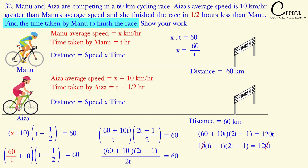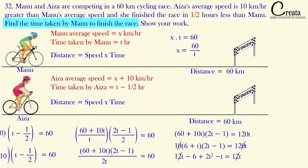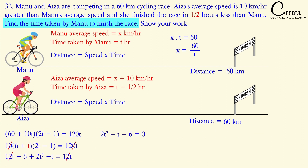Opening the bracket: (6 + t)(2t − 1). Multiplying 6 by (2t − 1) gives 12t minus 6. Multiplying t by (2t − 1) gives 2t squared minus t. The 12t terms cancel, so we get the equation: 2t² − 3t − 6 equals 0. This is a quadratic equation.